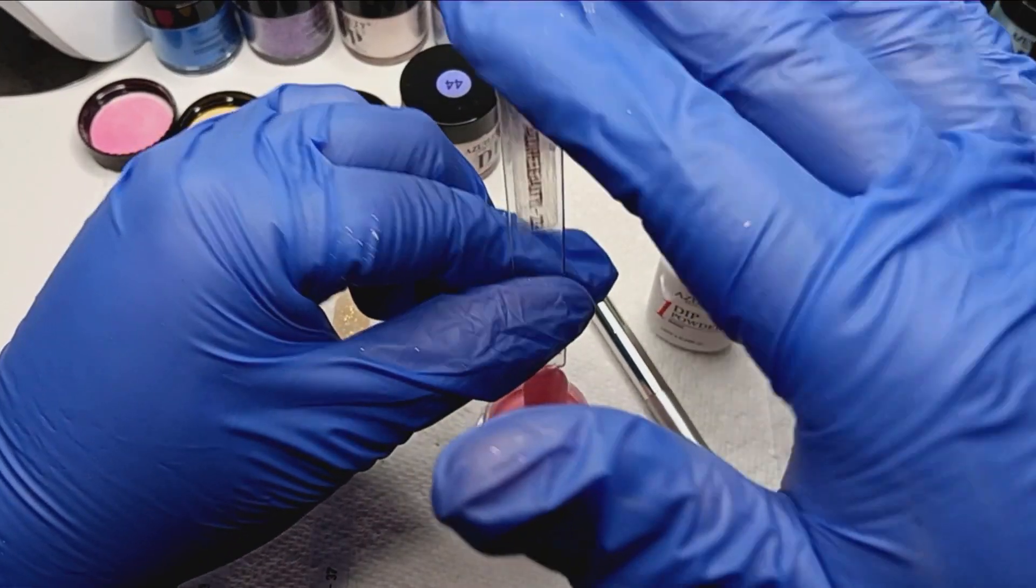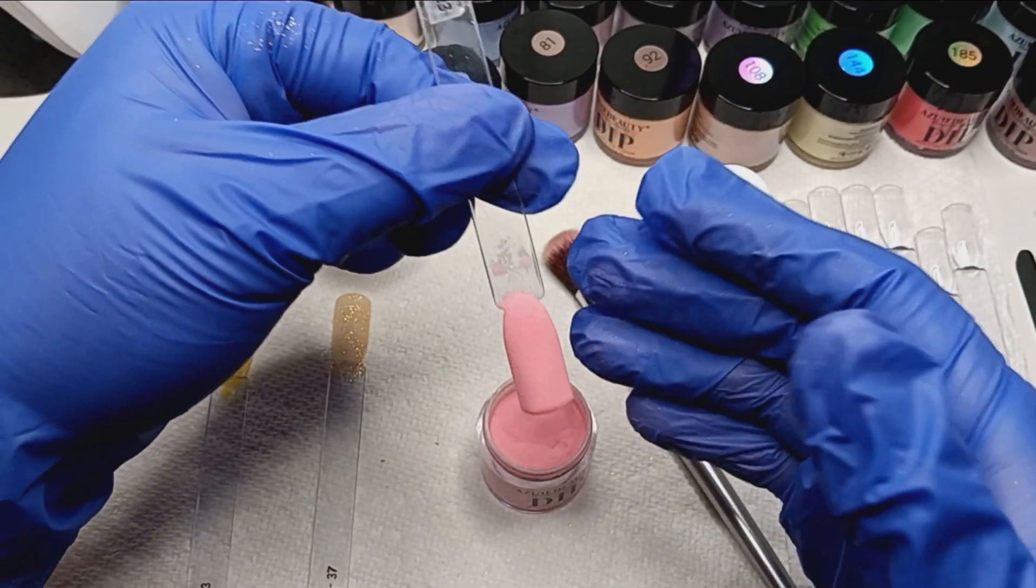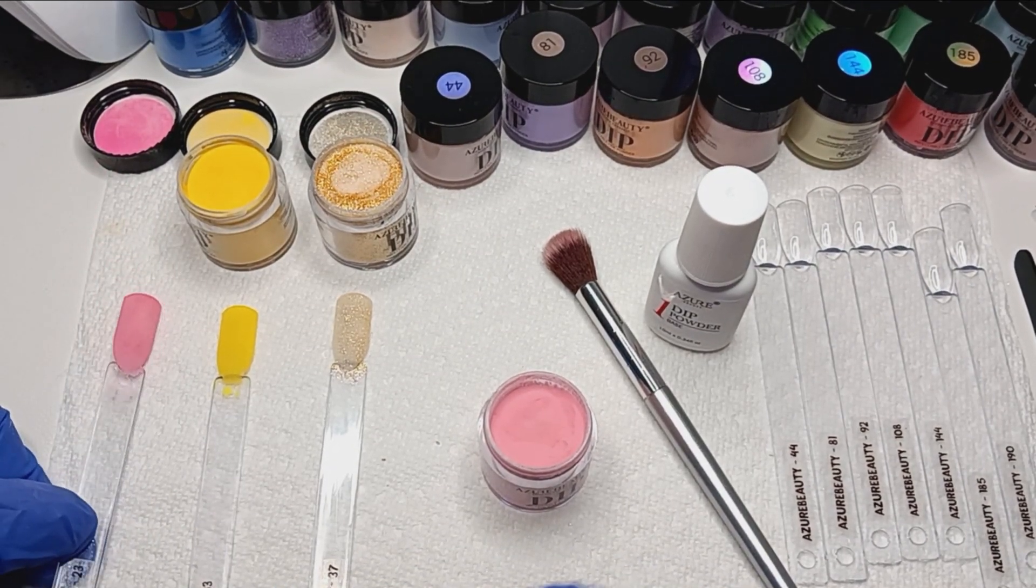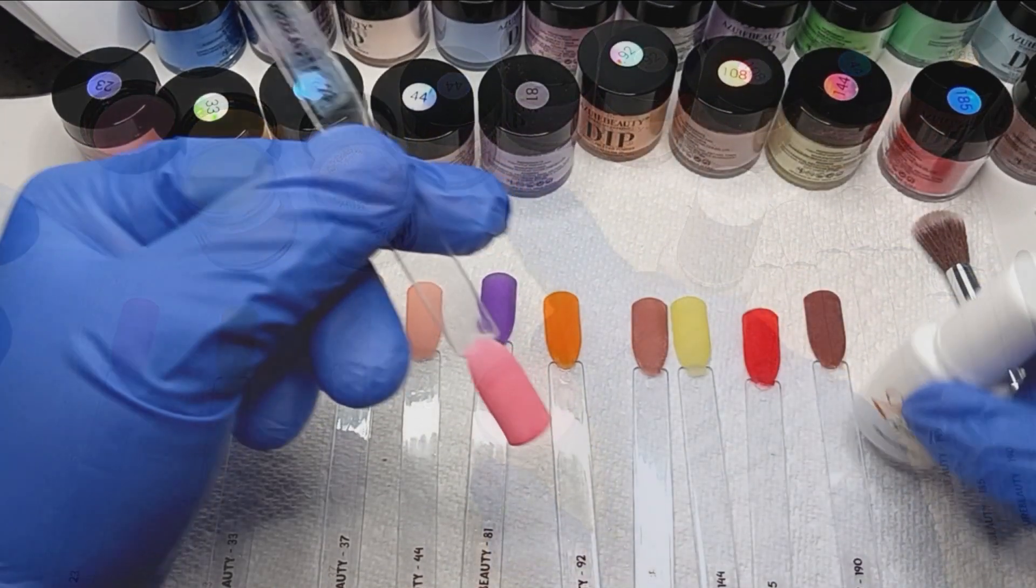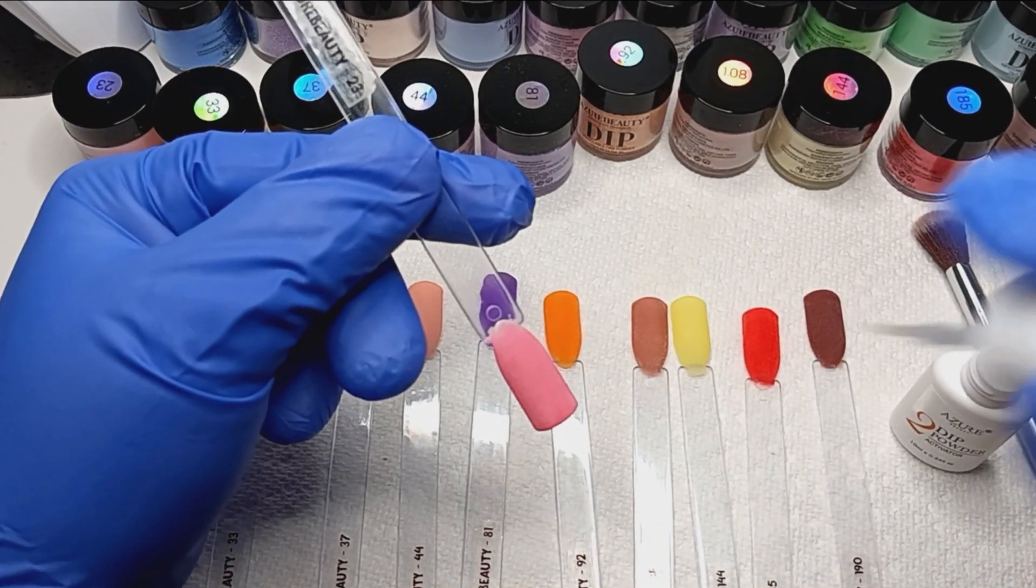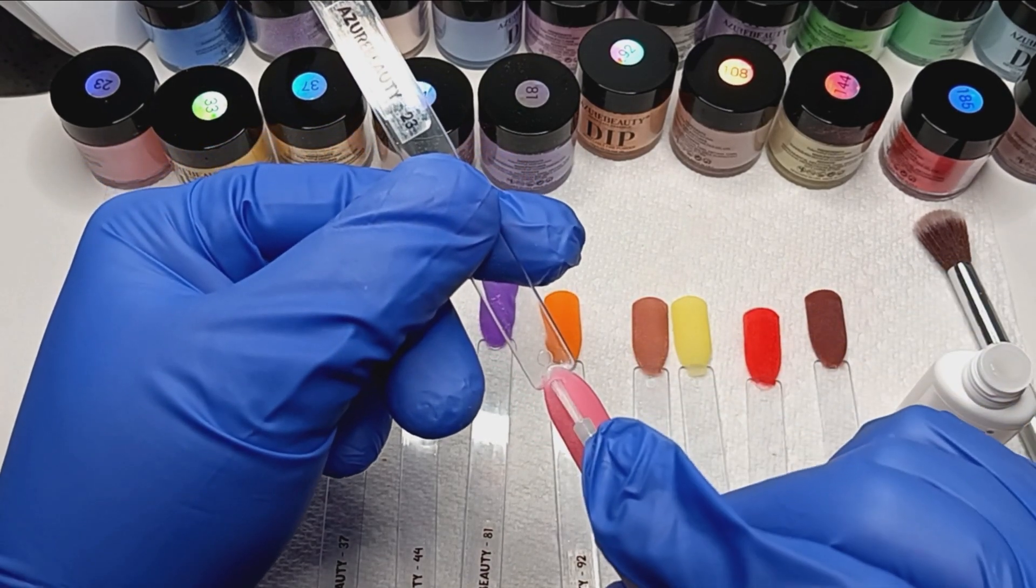The way that I'm doing these swatches is the exact same way that I would apply the dip powder to my own nails. I do, in this case I'm only doing two layers. One, because I don't want to really waste the product. But I want to give it enough opacity to show you how pigmented these colors are and also just to get a good look of the color.